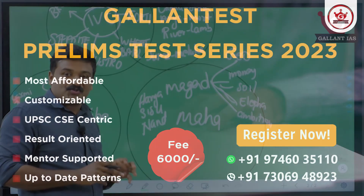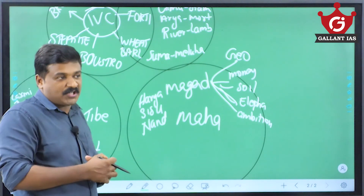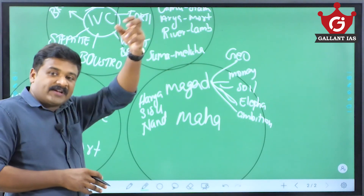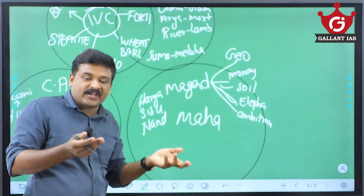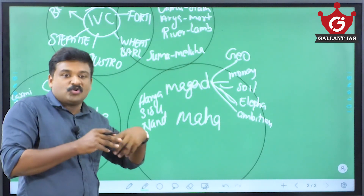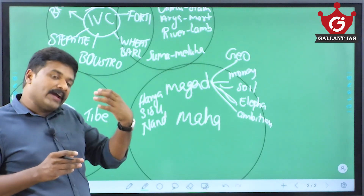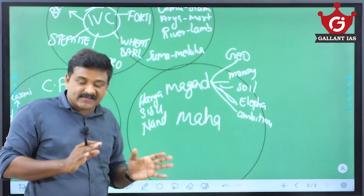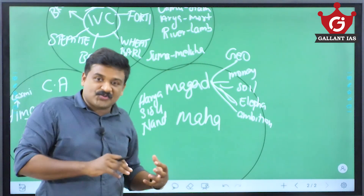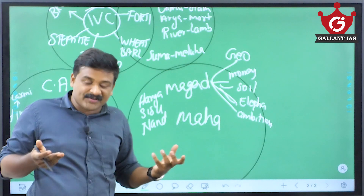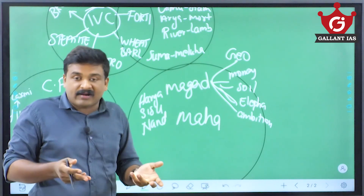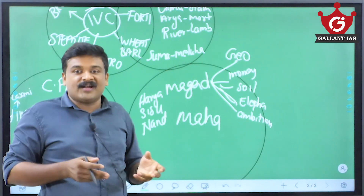Then comes the Mahajanapadas — there were 16 Mahajanapadas, the greater kingdoms. You should know the monarchies and the semi-republican states, also called Ganas or Sanghas. They were not actually republics because even though they were run by councils, those councils were mostly dominated by aristocratic classes, with exclusion of Brahmins, Vaishyas, Shudras, etc. So study the monarchies and oligarchies or semi-republican states and their characteristics and geographical identity.